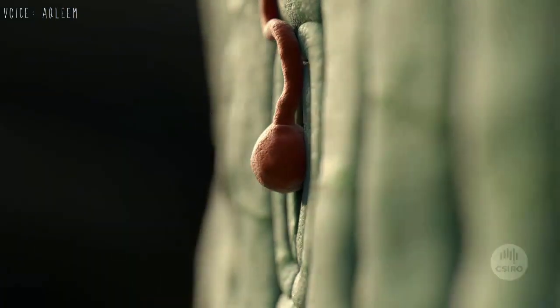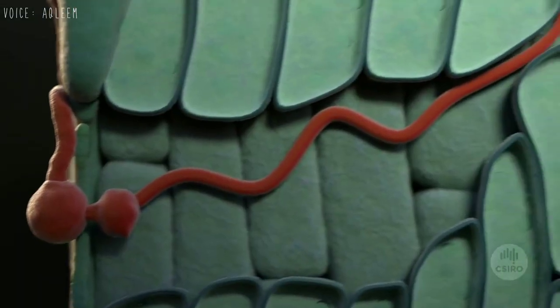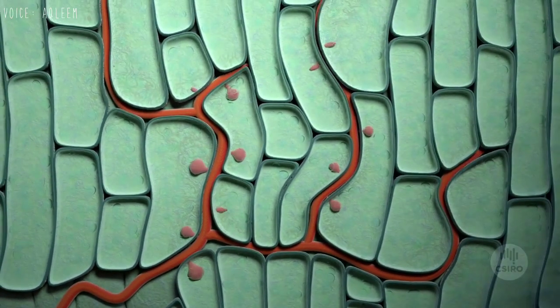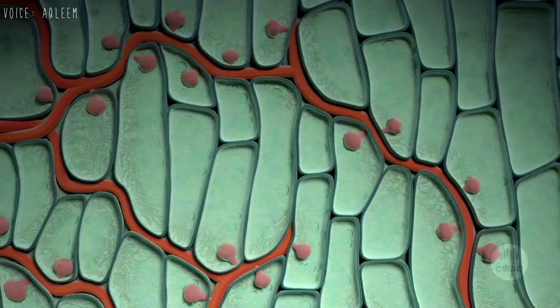The invading rust fungus has penetrated deep inside the plant tissues. As the invasion progresses, the fungus produces spores.